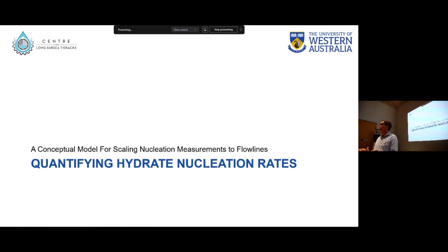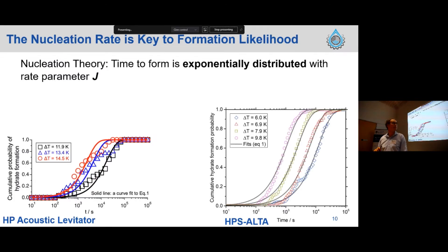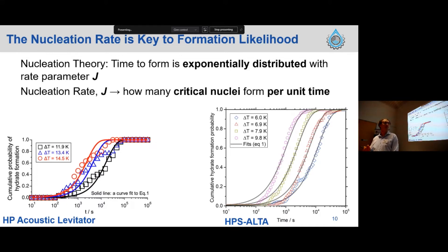Now I'm going to move on to talking about how we actually quantify nucleation rates and what they are experimentally. Understanding the nucleation rate is really important to understanding formation likelihood in our system because it tells us on average how long we will have to wait for hydrate to form. Nucleation theory tells us that the induction time is exponentially distributed with rate parameter J — what we call the nucleation rate. This means we have these formation probability curves, which we've shown both for the acoustic levitator and for the HPS Ultra, where if we hold at a fixed subcooling, our time to form is exponentially distributed. What J physically means is how many critical nuclei form per unit time. We're waiting many hundreds or thousands of seconds, so we're looking at values of J much lower than one for these systems.